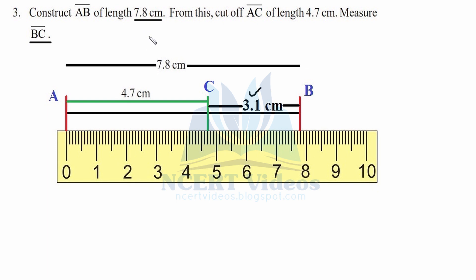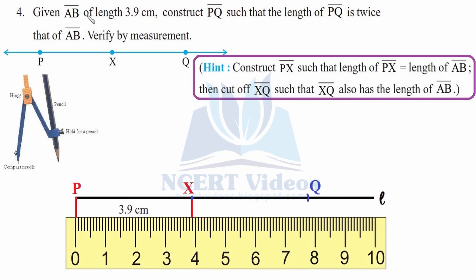Question four: given line segment AB of length 3.9 cm, construct line segment PQ such that the length of PQ is twice that of AB. Verify by measurement. We will take line segment PQ, then take PX equal to the length of AB. Then we will take XQ having equal measure to line segment AB.